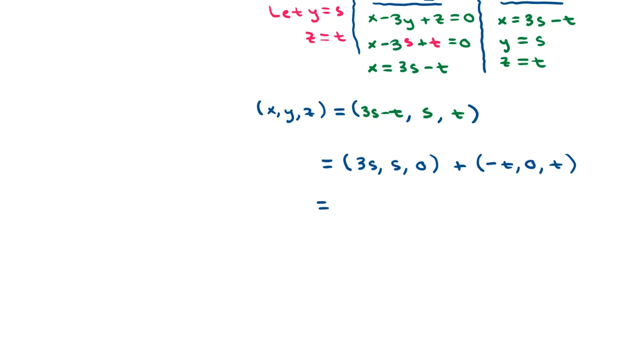The first is that I'm going to factor out the parameter s from all three of these components. So I'm going to put s in front of a specific ordered triple that will be 3 comma 1 comma 0. And I'm going to factor t out from the second vector, which will give us some specific components as well, negative 1, 0, and 1 in fact.